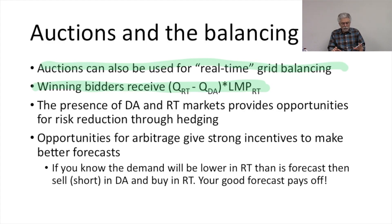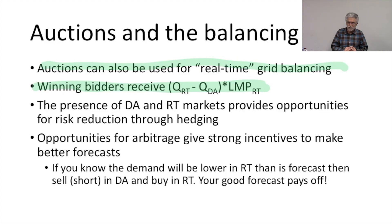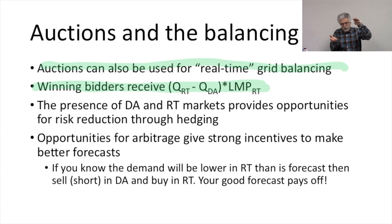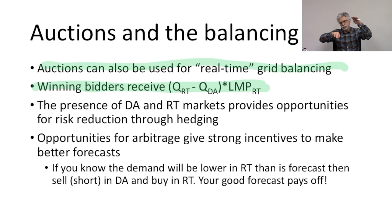If you know the demand will be lower in real time than it was forecast, then sell in the day-ahead market and buy in the real-time market, and your good forecast pays you a dividend. In the process, you have smoother prices based on your better forecast. You have brought today's price down closer to what it ought to be, and your ability to buy in the real-time market is going to be pushing those prices up. So your better information about electricity demand forecast is actually bringing today's and tomorrow's prices closer together.